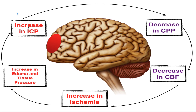Think of it this way: as intracranial pressure increases and approaches mean arterial pressure, cerebral blood flow decreases, resulting in decreased cerebral perfusion pressure. As cerebral perfusion pressure decreases, the body compensates in an attempt to increase blood volume and raise cerebral blood flow. This results in increased ICP, and the cycle continues.